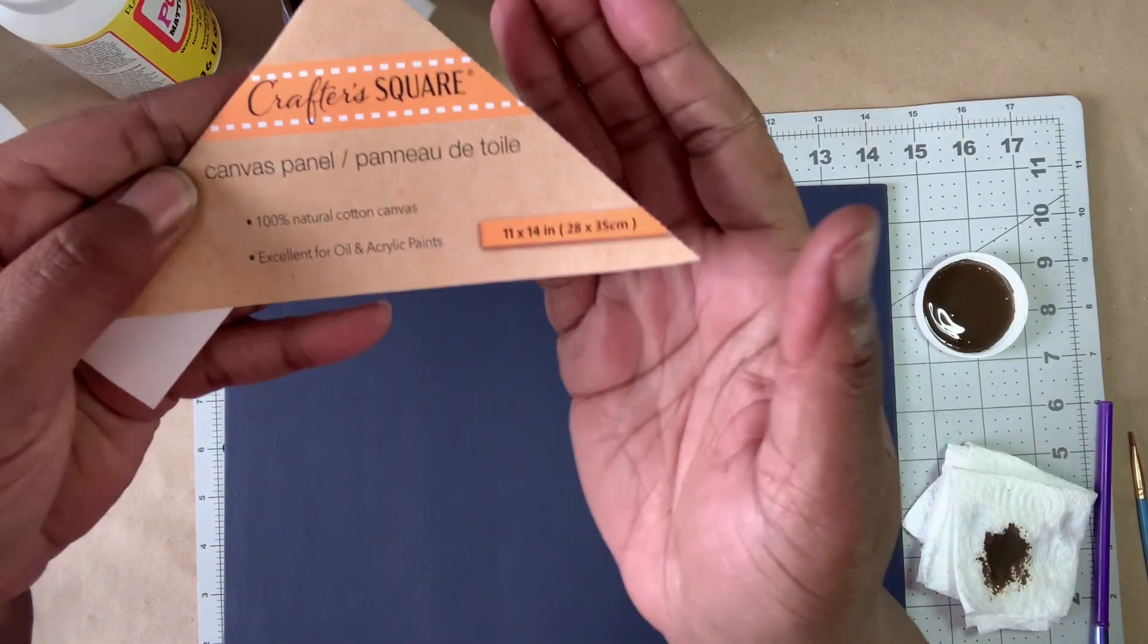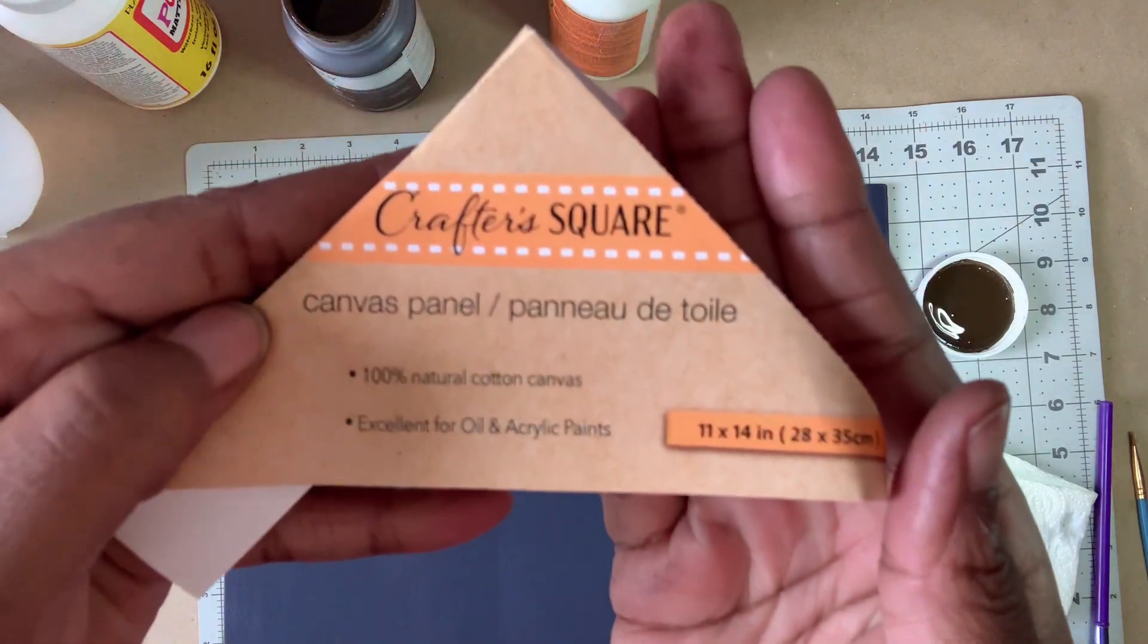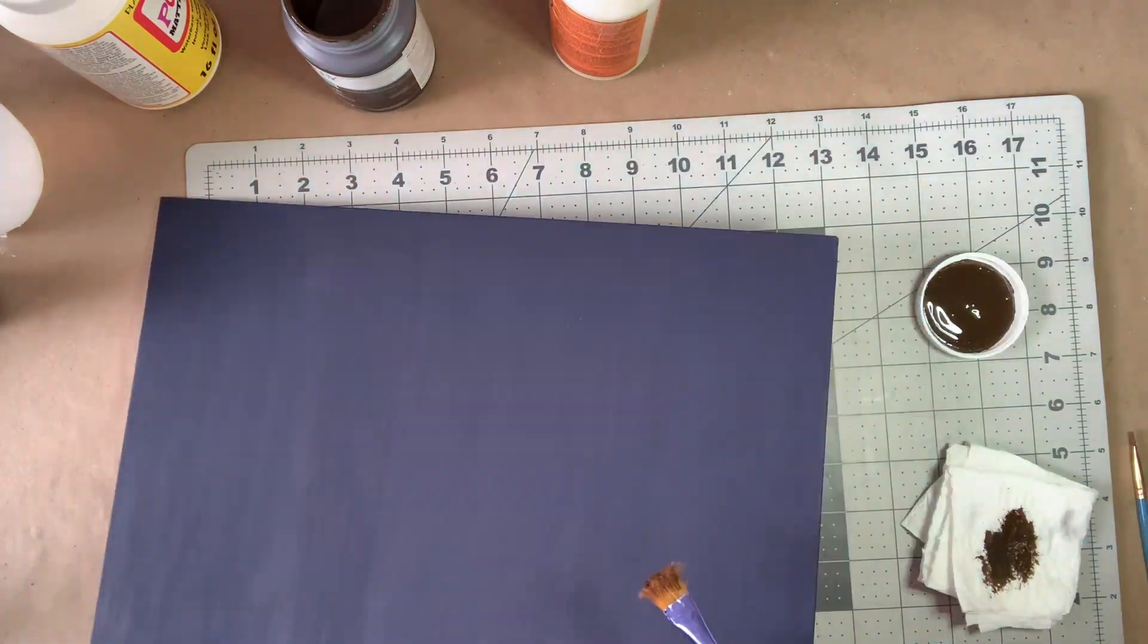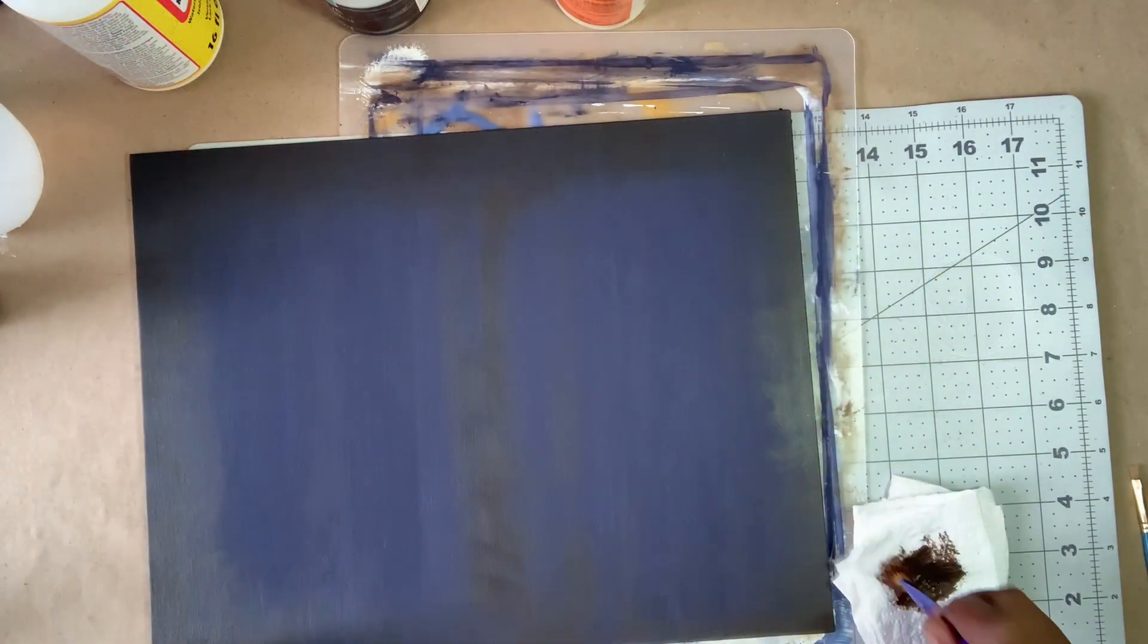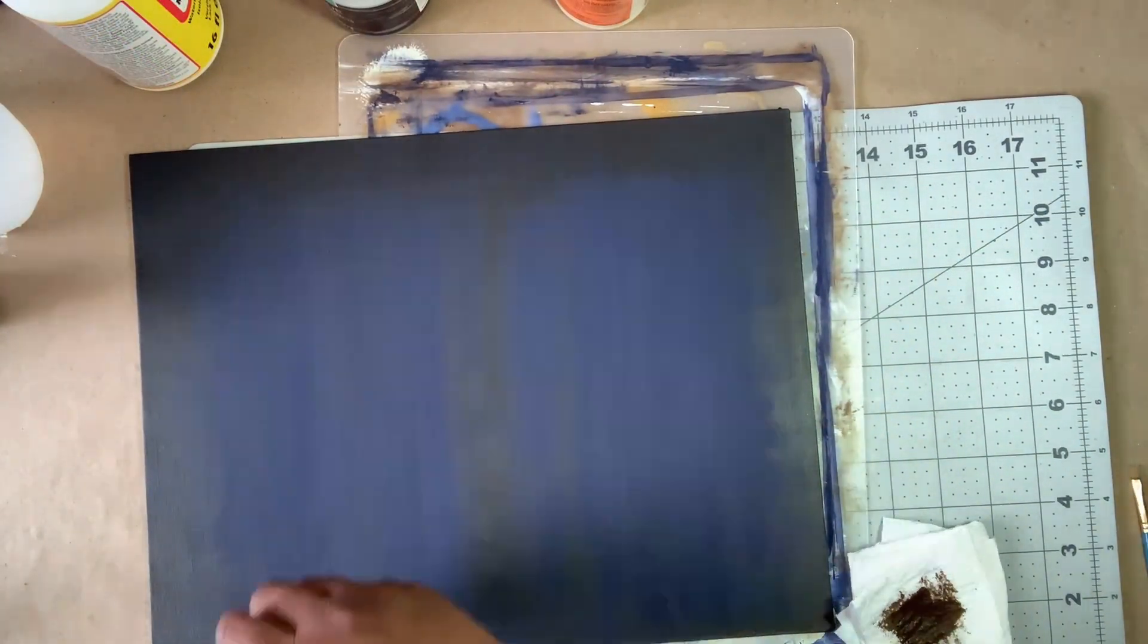Here I'm using an 11 by 14 canvas panel from Dollar Tree that I had painted previously with a mixture of navy blue and black. I used the Antique Wax again to give it some additional color and dimension.